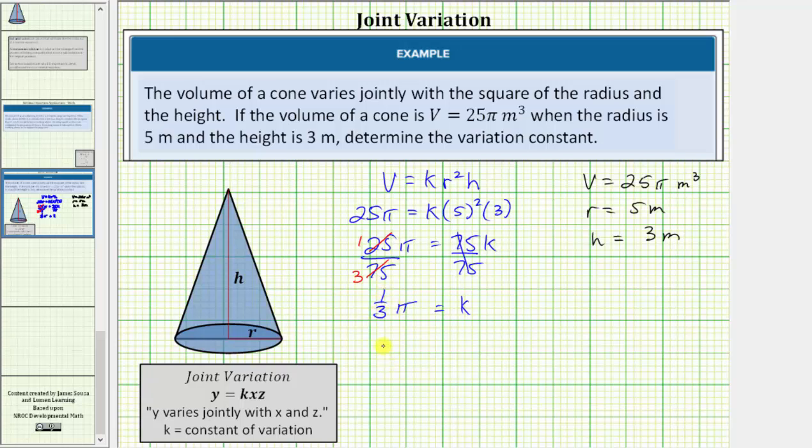So k equals one-third π, and if we want, k equals π divided by 3, where k is the variation constant. So this is what this question is asking for. However, now that we know k, let's go ahead and write the volume formula for a cone.